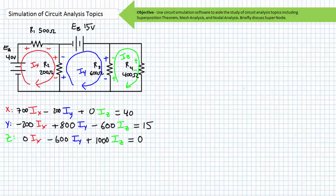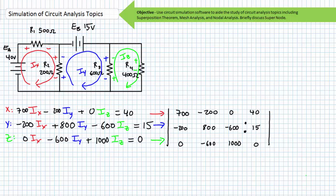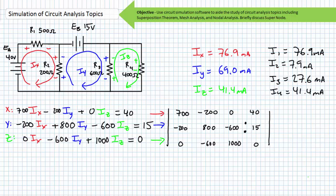The KVL equation for loop Z is V3 + V4 = 0. Substituting in the necessary values and arranging in the general format yields 0·IX − 600·IY + 1000·IZ = 0. These general format equations for the three loops with three independent variables can be placed into a 3×4 matrix where the reduced row echelon format function yields IX = 76.9 mA, IY = 69 mA, and IZ = 41.4 mA, consistent with our earlier superposition theorem analysis. I1 is 76.9 mA left to right. I2 is 7.9 mA downwards because IX and IY are in opposition. Current I3 is 27.6 mA downwards because IY and IZ are in opposition. Finally, current I4 is found to be 41.4 mA downwards.